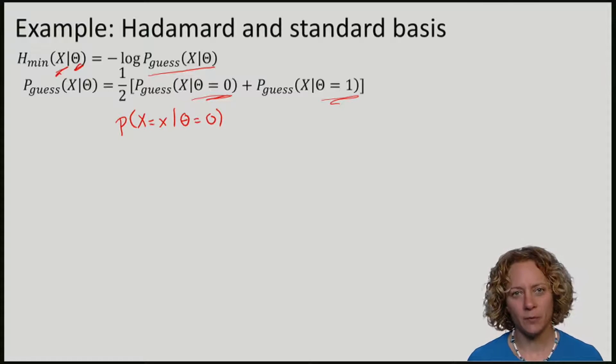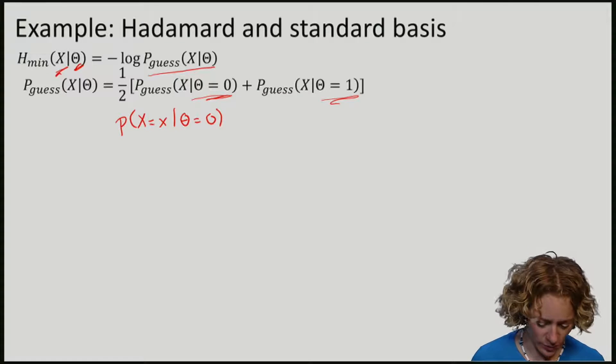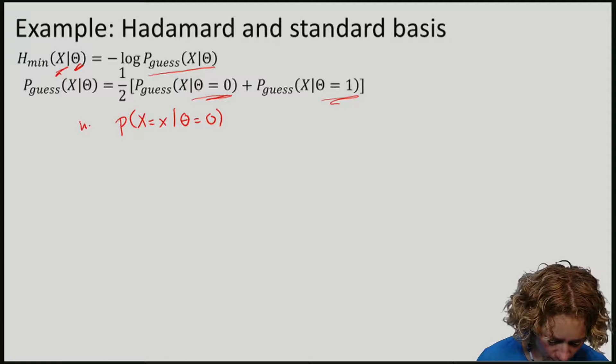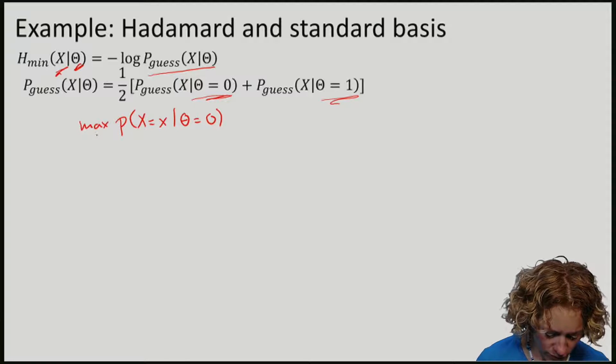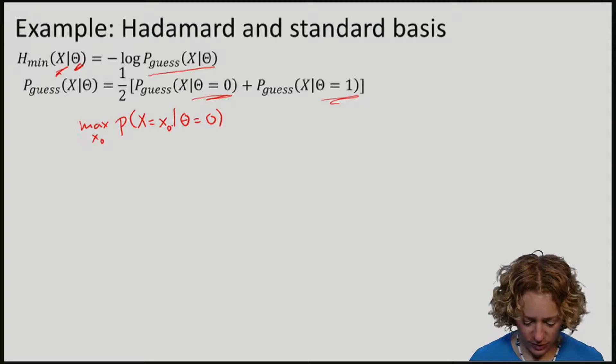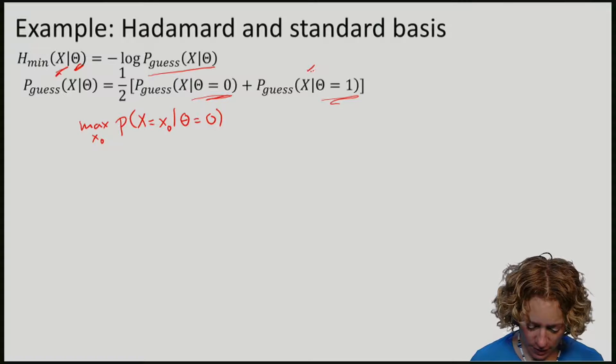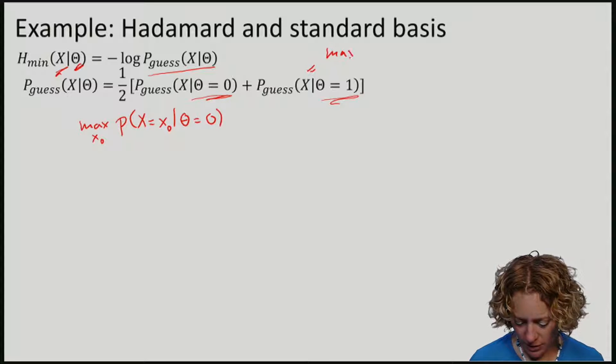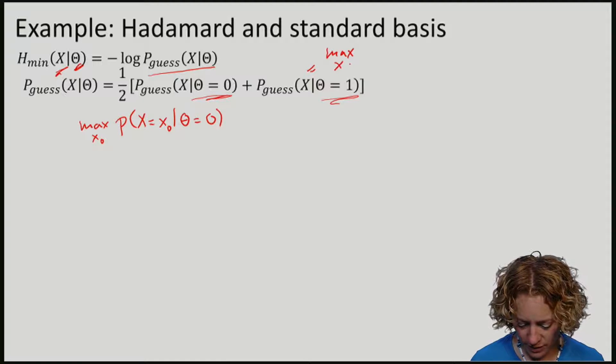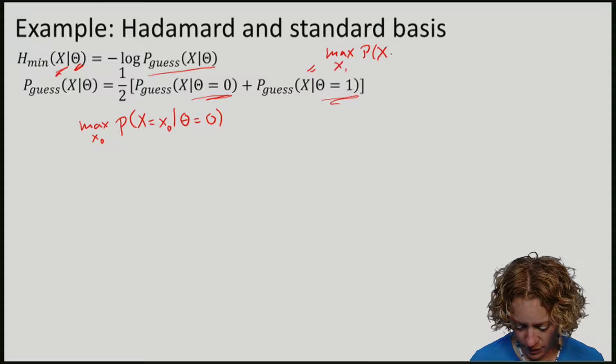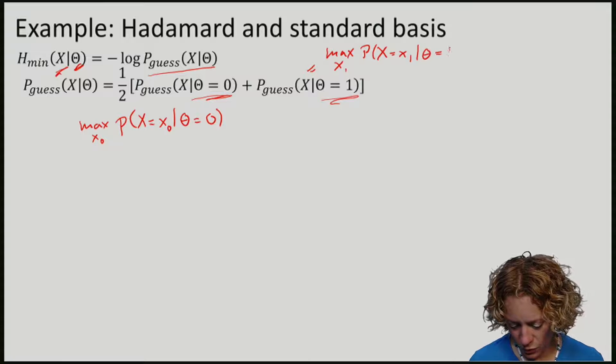The probability of guessing is just the maximum over X, and X can of course depend on the basis, if theta was zero and the maximum over X if theta is one.